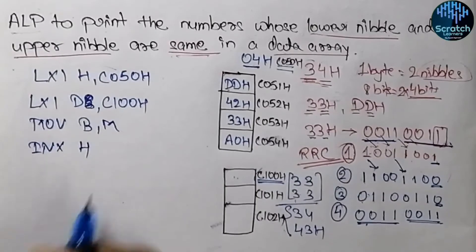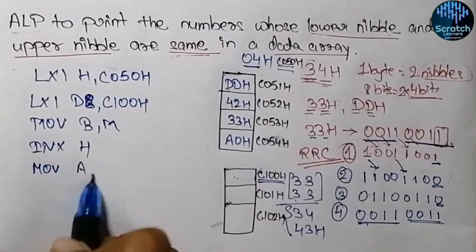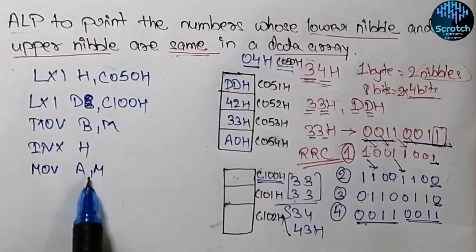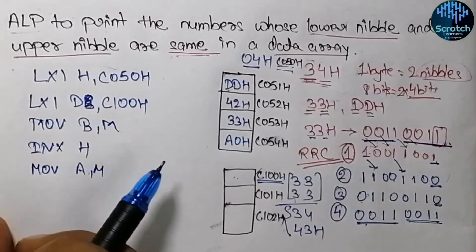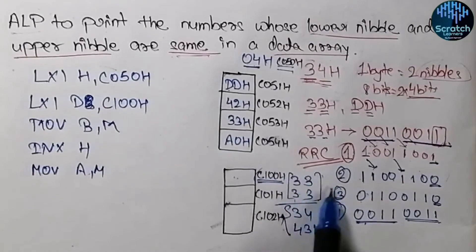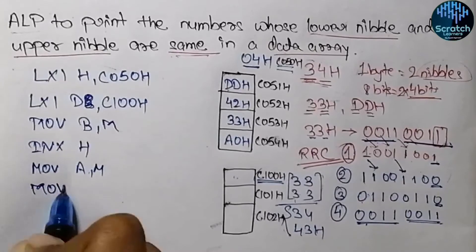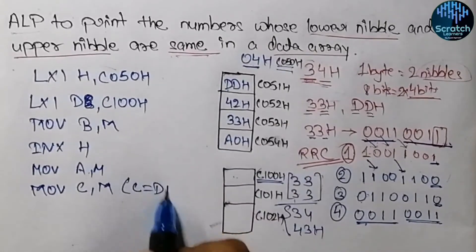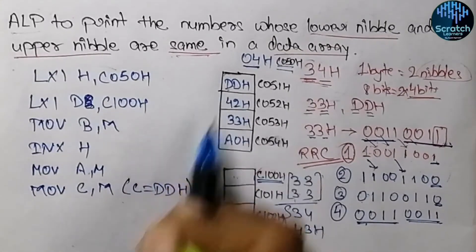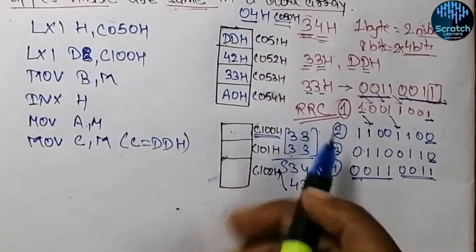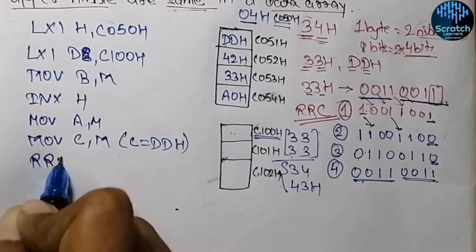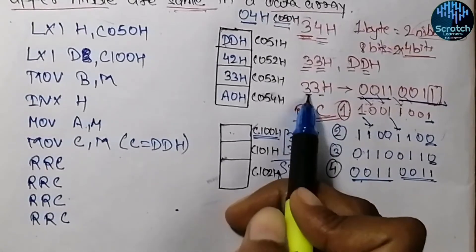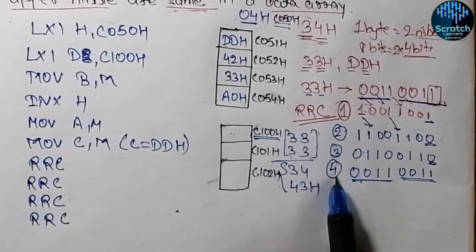Then INX H to point to the first element, and MOV A, M to load it into the accumulator. Before rotating, we save a copy in register C with MOV C, A — so C holds the original data. Then we perform RRC four times to swap the lower and upper nibbles in the accumulator.